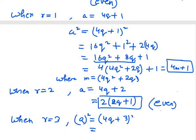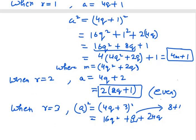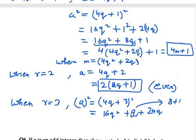4q plus 3 whole squared can be written as 16q squared plus 9 plus 2 into 4q into 3, which is 24q. Now we will write 9 as 8 plus 1, so that it can be written in the form 4n plus 1. So it is 16q squared plus 24q plus 8 plus 1. We can take 4 common from the first three terms.